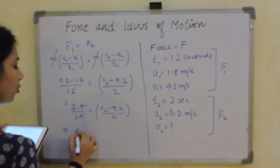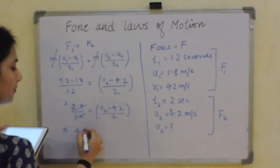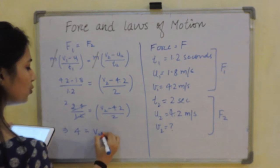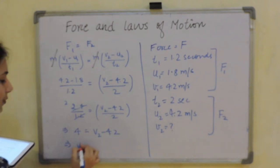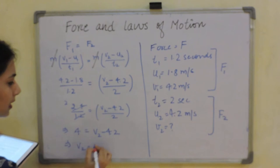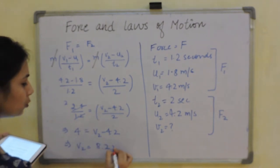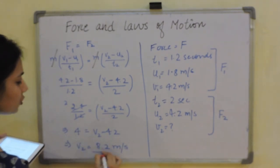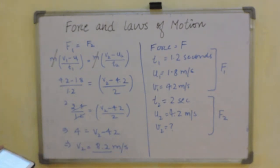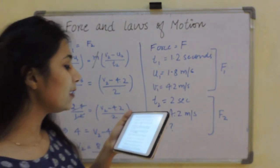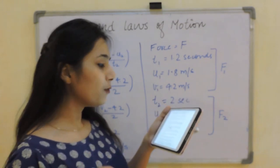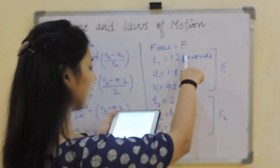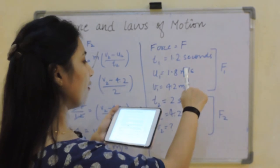So I get 4 = V2 - 4.2, which gives V2 = 8.2 m/s. This is the final velocity. The key approach: since the same force acts on the same mass, F1 = F2, mass cancels, and you equate the acceleration terms from both intervals.